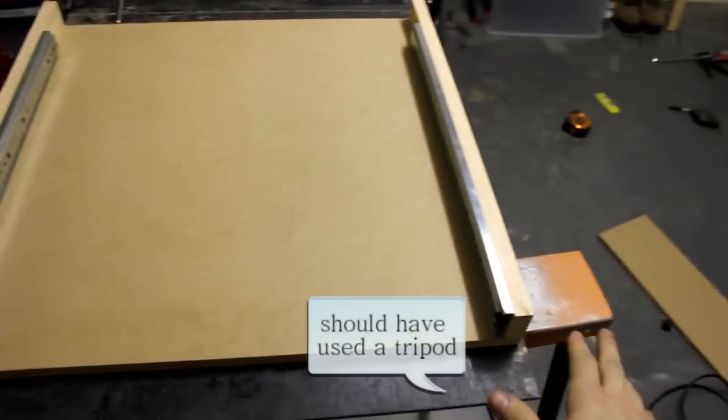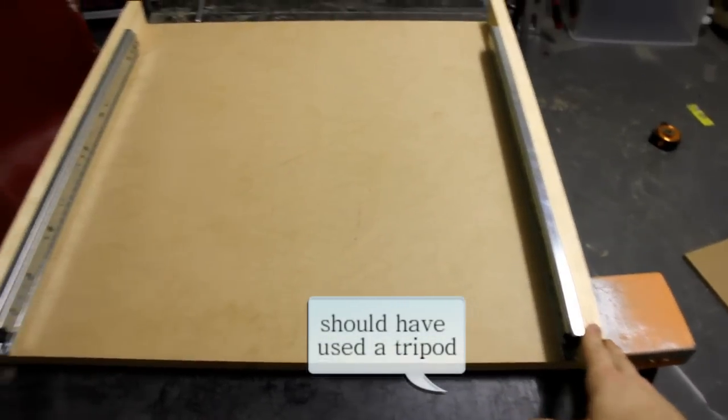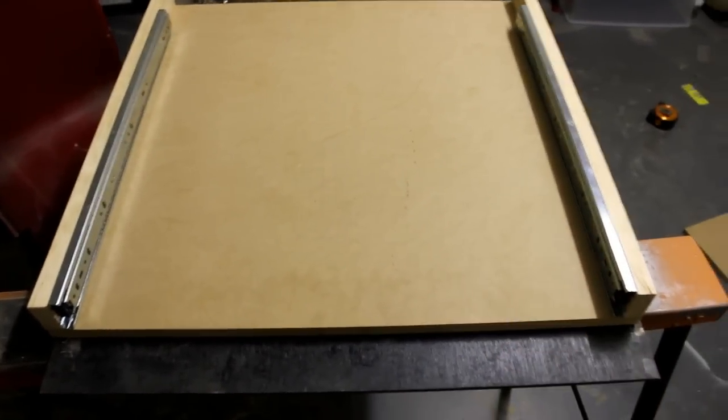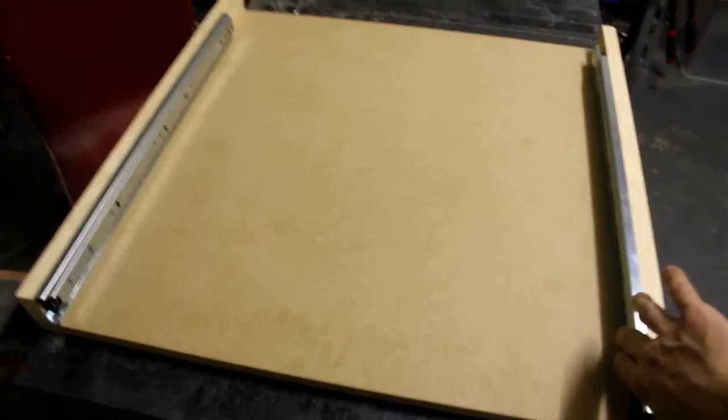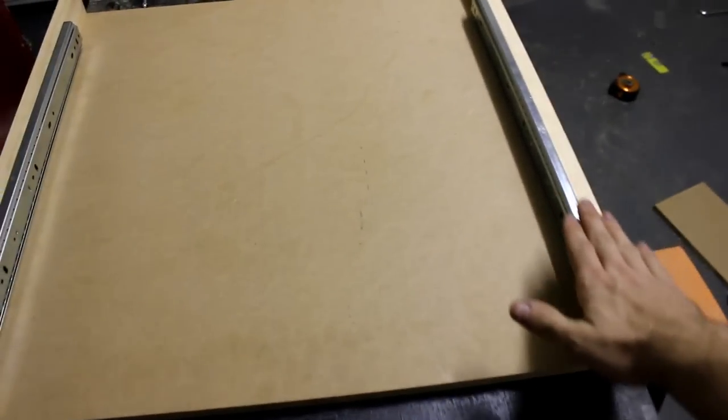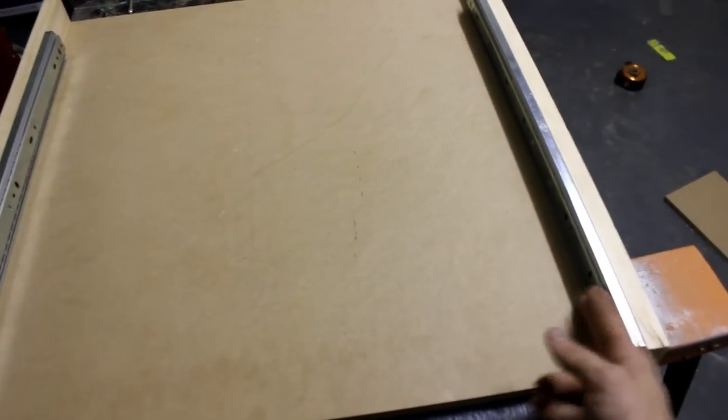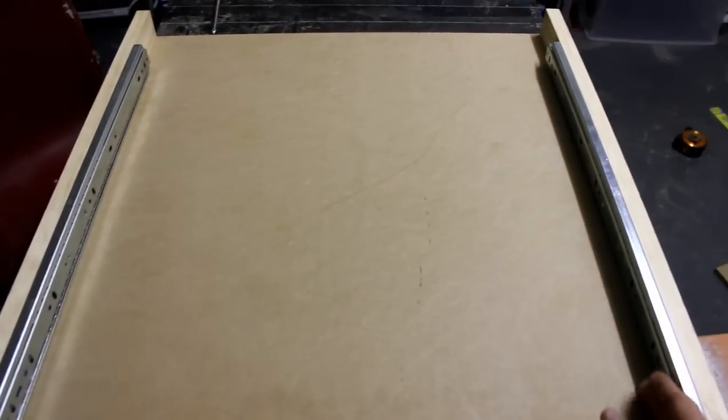I've screwed these two bits of 42 by 19 on. I haven't glued them yet because I'm just going to fit everything up and make sure it all works first. I've also attached these two drawer slides. They seem to be sturdy and I reckon they'll do the job quite nicely. Next part is to build the top build plate and add the two bits of 42 by 19 on the inside of these to attach these rails.